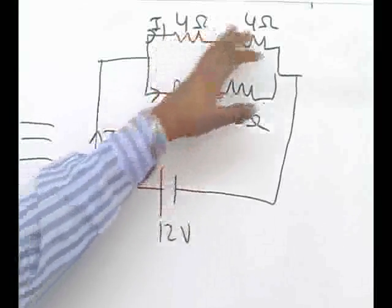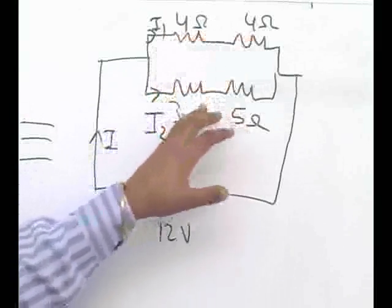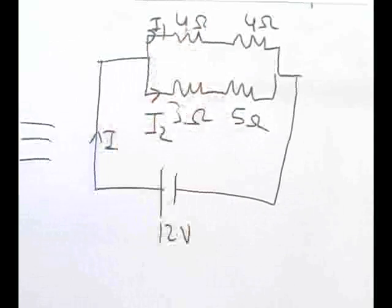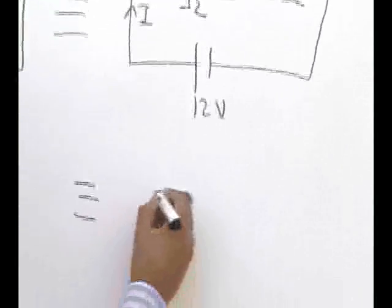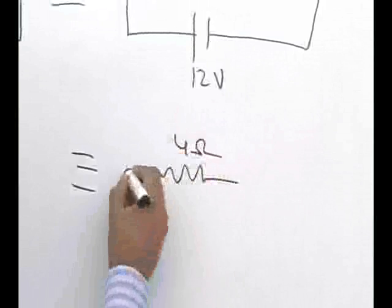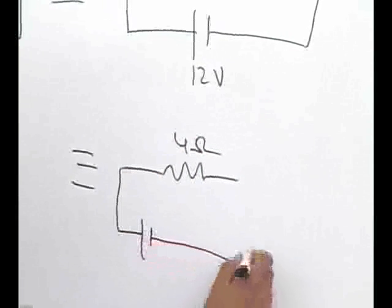If I simplify this, 4 and 4 gives 8, this also gives 8. So there are 8 ohm resistances in both arms of a parallel configuration. This gets converted into a 4 ohm resistor finally, which is connected to a 12 volt battery.